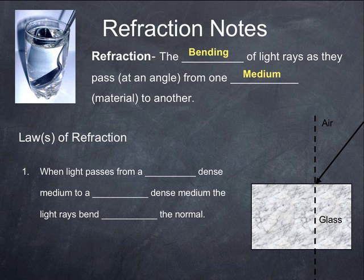The direction that it bends is dependent on which substance is more dense. The medium the light is traveling from or the medium is traveling into. So we call this the law of refraction. The law of refraction says, the first part is that when light passes from a less dense medium to a more dense medium, the light rays bend toward the normal.